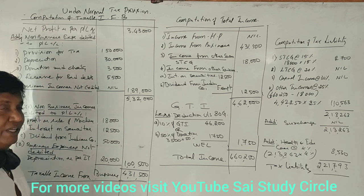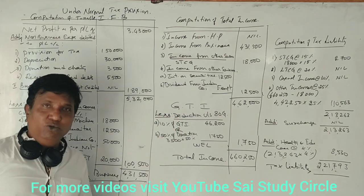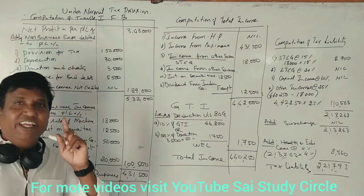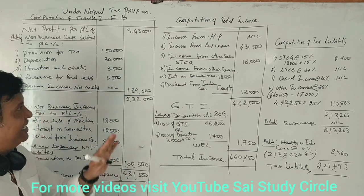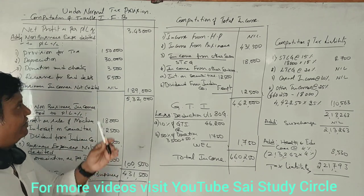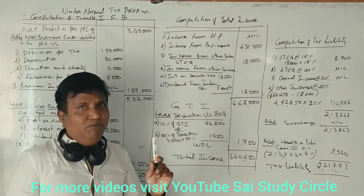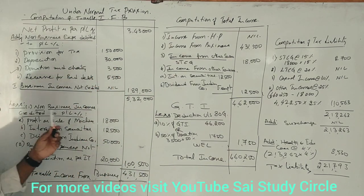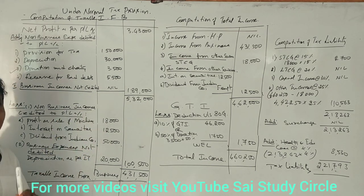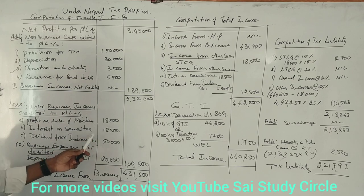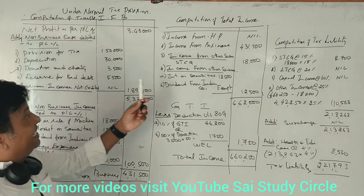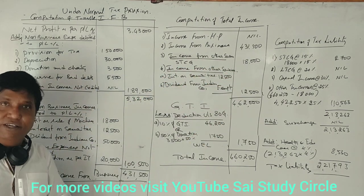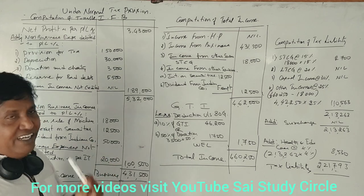Next, we go to the second step — computation of total income. First, income from salaries: nothing. Income from house property: nothing. When calculating total income, check the less items column from step one for non-business incomes under each head. Income from house property: nil. Income from business: we have 4,31,500.